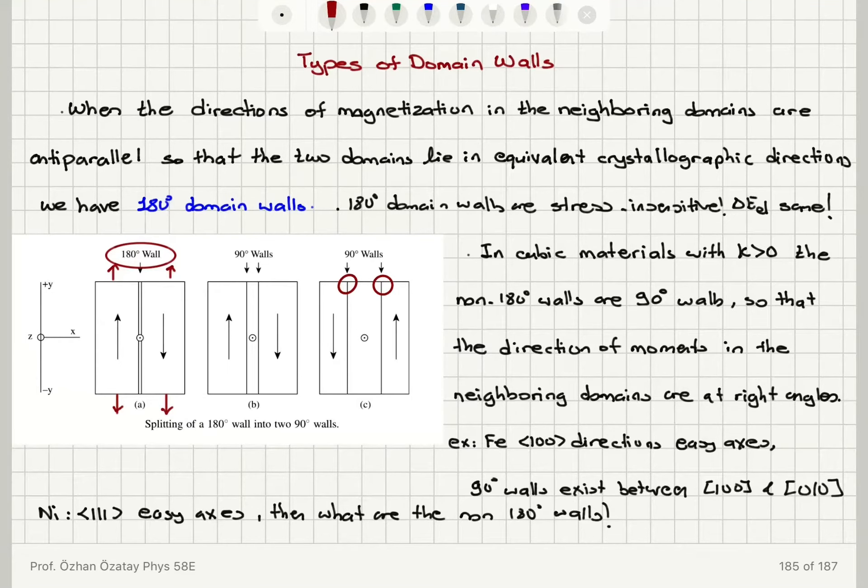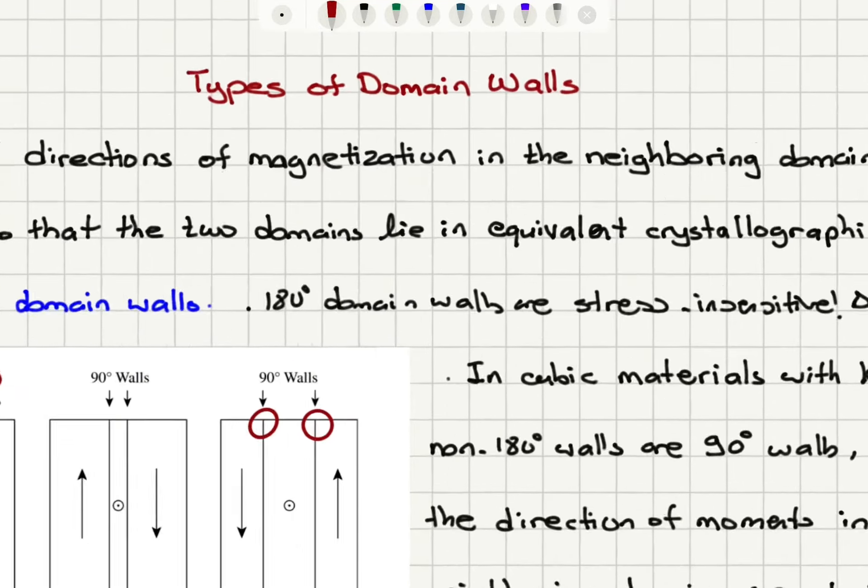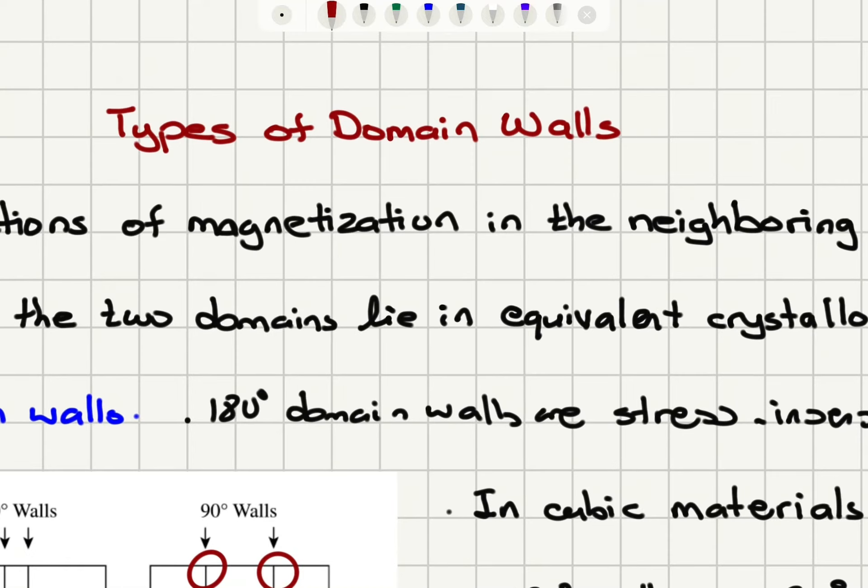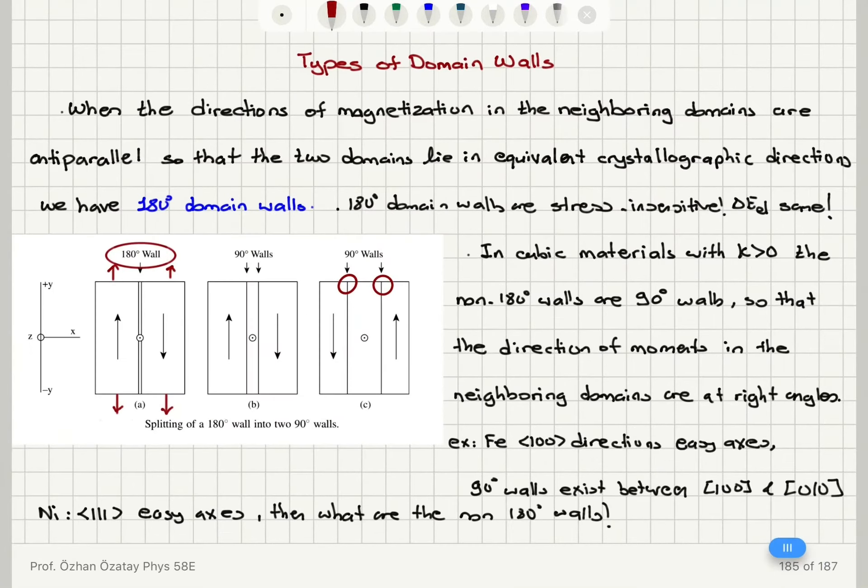Now we will talk about types of domain walls. The first type is what happens if you have uniaxial anisotropy and cubic anisotropy.